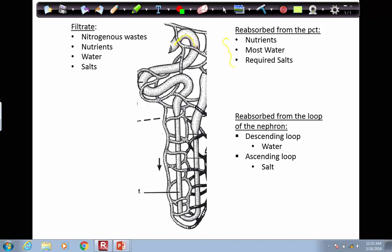So as the filtrate is traveling in the proximal convoluted tubule, nutrients, water, and salts will leave the PCT and move into the blood of the peritubular capillary network. The filtrate itself continues to flow in the PCT, but those substances are moved into the blood.